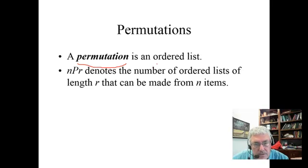First, we'll talk about the word permutation. A permutation is an ordered list. The order matters when you have a permutation. We denote as n P r the number of ordered lists of length r that can be made from n items. And here, little r is not ever going to be any bigger than n.